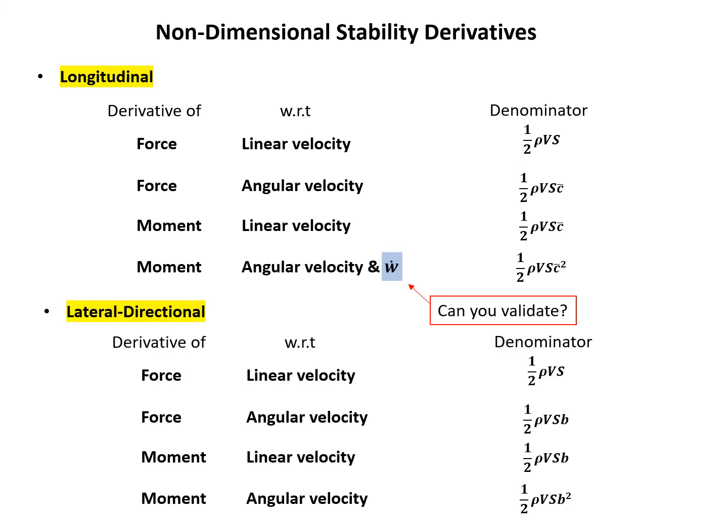Similarly, we have the lateral directional table. In lateral-directional derivatives, you will always see b and never c̄, because b is the characteristic length for lateral-directional motion.